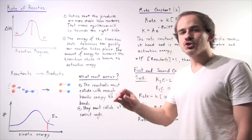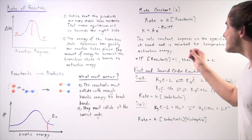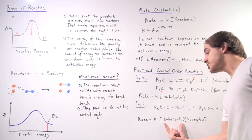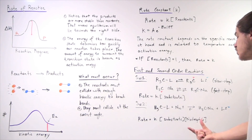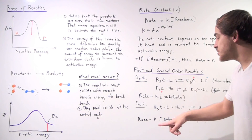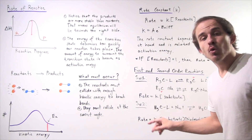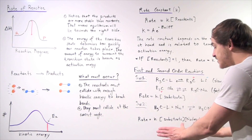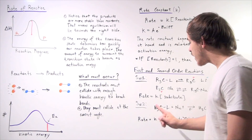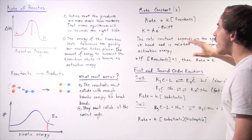Now let's discuss the SN2 reaction. The SN2 reaction is the second-order reaction, because it depends on both the concentration of substrate as well as the concentration of nucleophile. Increasing either of these concentrations will increase the rate of our reaction. But the constant K will not increase — concentrations will do nothing to the rate constant, because the rate constant is related to the Arrhenius equation.